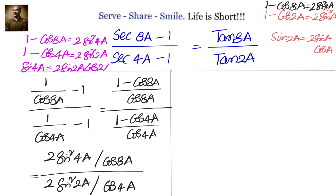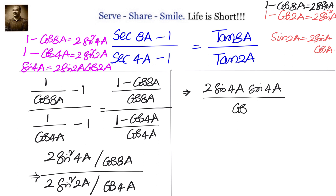Now let's apply these formulas and go to the next step. In the next step we will have 2sin²4a divided by cos8a, and we'll do the reciprocal — once it goes from denominator to numerator it becomes cos4a divided by 2sin²2a, which can be written as 2 sin2a × sin2a.